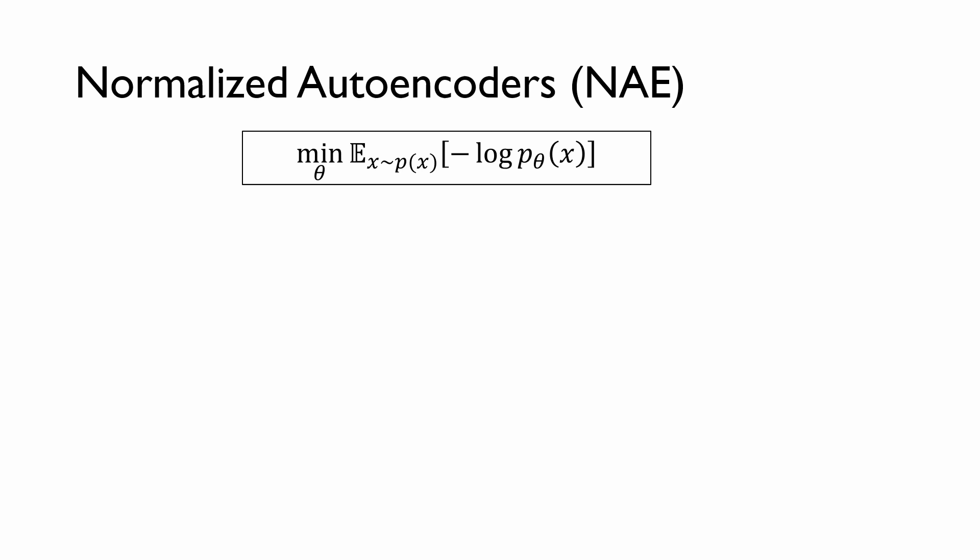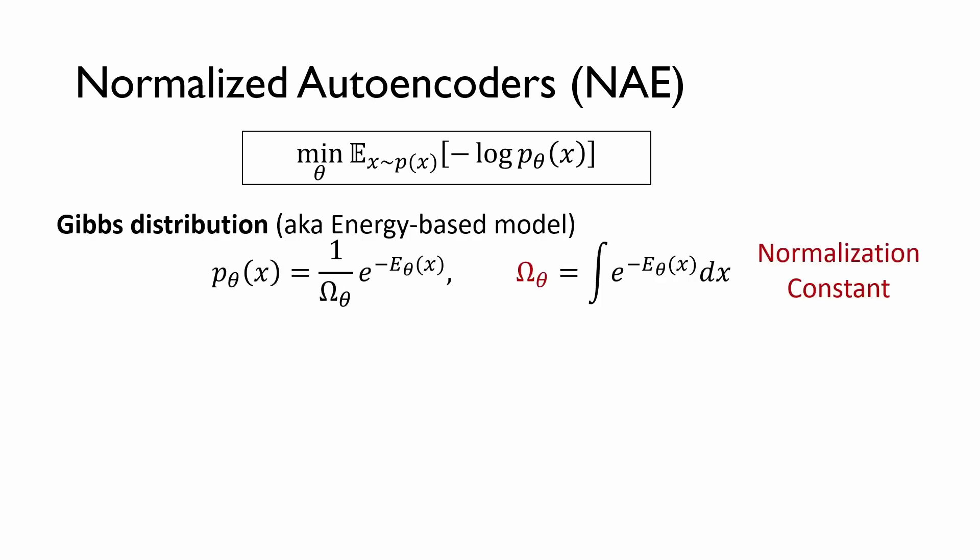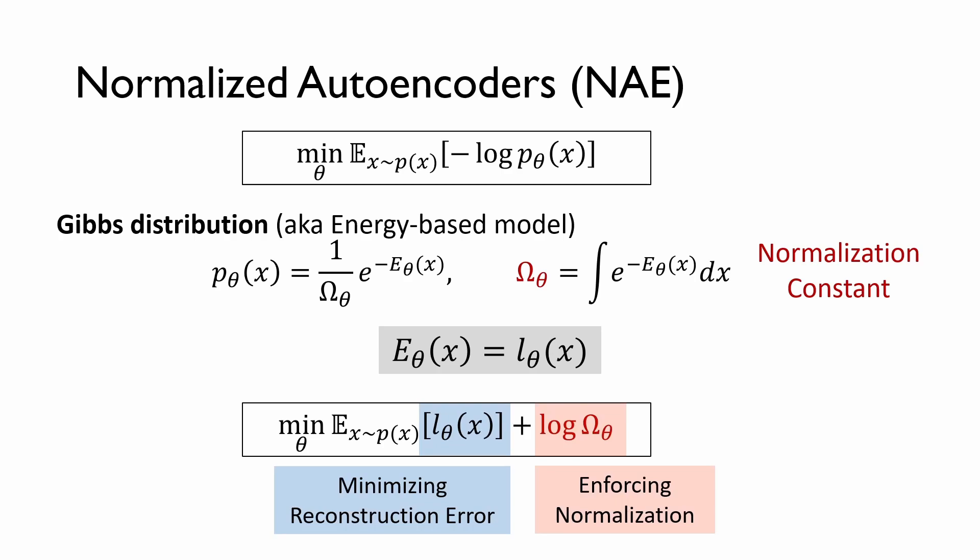Normalized autoencoder is an autoencoder trained via maximizing the likelihood. To use the likelihood, we first need to define a probabilistic model p_θ. We define p_θ using an energy-based model framework. The parametric energy function E defines the density, and ω is the normalization constant. Our key idea is to set the energy as the reconstruction error. As a result, maximization of the likelihood becomes minimization of the reconstruction error, with an additional term responsible for the normalization constraint.